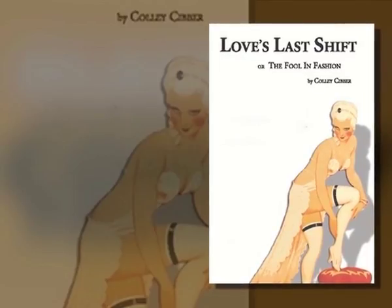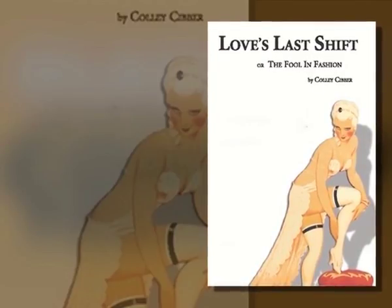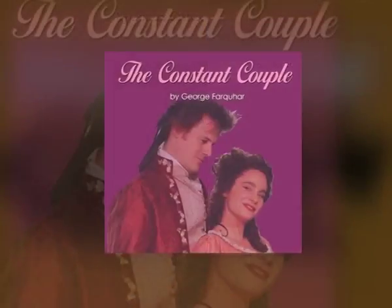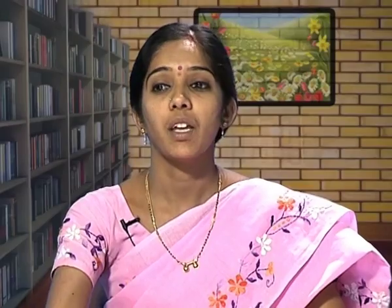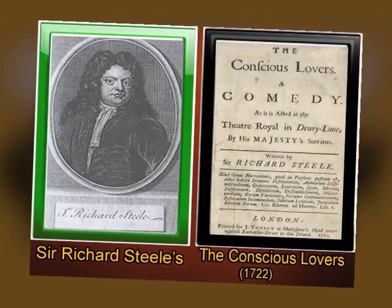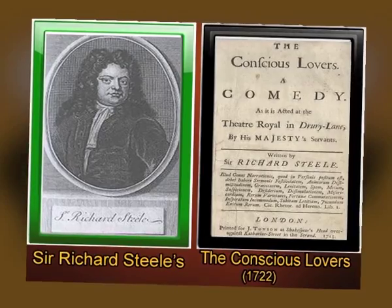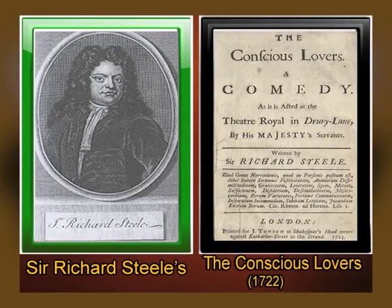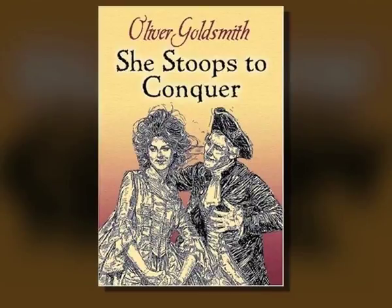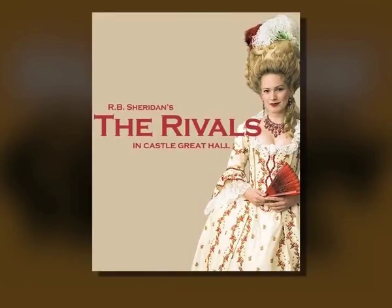Colley Cibber's Love's Last Shift published in 1696 and George Farquhar's The Constant Couple published in 1699 are a few examples of sentimental comedy. The best-known sentimental comedy, Sir Richard Steele's The Conscious Lovers published in 1722, deals with the vicissitudes of its heroine, Indiana. Sentimental comedies coexisted with traditional comedies like Oliver Goldsmith's She Stoops to Conquer and Sheridan's The Rivals.